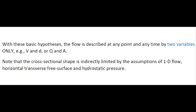With this basic hypothesis, the flow is described at any point in time by two variables only — for example, the velocity and the depth. Note that the cross-sectional shape is indirectly limited by the assumption of one-dimensional flow, horizontal transverse surface, and hydrostatic pressure.